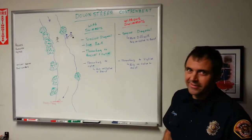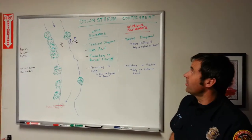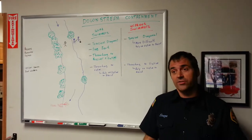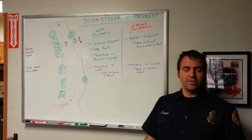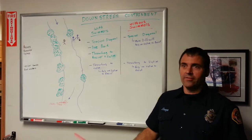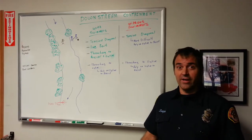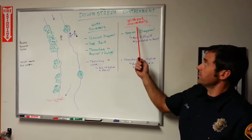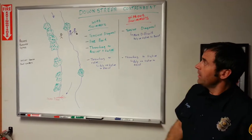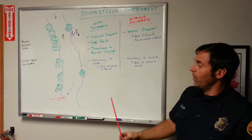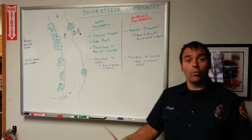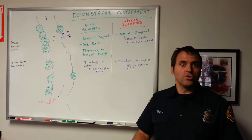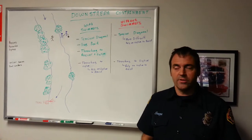We're going to talk about what happens if you are assigned to downstream containment on a river rescue — what it means to be in downstream containment, what your job might be, advantages and disadvantages of having downstream containment with swimmers or without swimmers, and what we can expect and what we should look for when we're down there. Basically, we're going to look at what our job is if we're assigned to downstream containment.